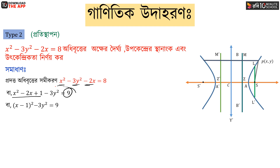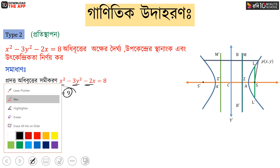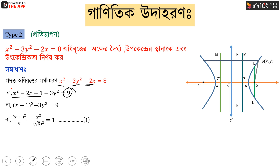We have x minus 1 whole square minus 3y² equal to 9. Dividing through by 9, we get: (x - 1)² divided by 9 minus y² divided by (√3)² equal to 1.